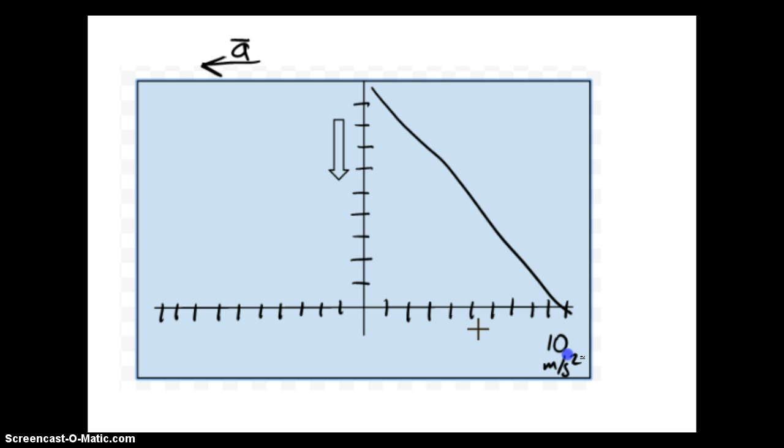This would be at 10 meters per second squared. And we'll just assign this the positive direction. We can probably figure out what our other values are then. I've divided this up into 10 even increments. And using that same length, I've divided this into the 10 increments.